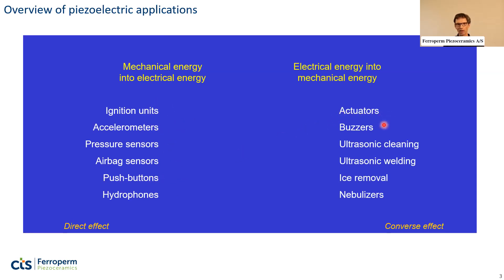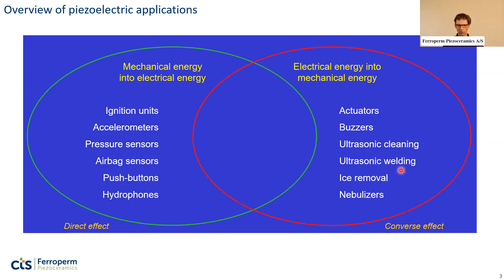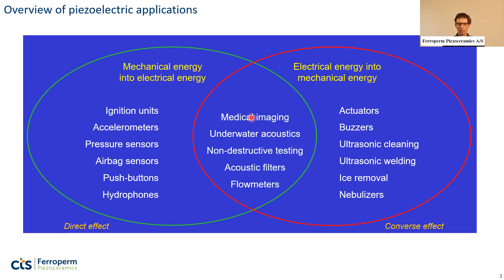Moving to the converse effect, one example I showed last time was the buzzer — a kind of loudspeaker where you convert an electrical signal into vibration. I can also mention ultrasonic cleaning and other examples. Finally, quite a few applications use both effects. For example, in medical imaging you use the converse effect to generate a sound signal and then the direct effect to convert the sound signal back into an electrical signal. A similar principle is used for underwater acoustics and non-destructive testing.